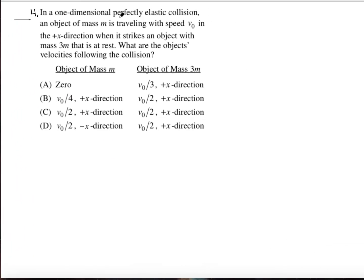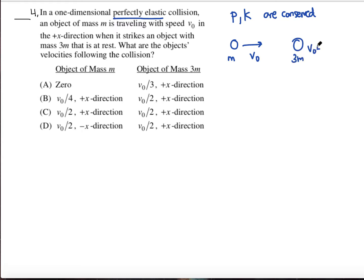For question number four, we have a one-dimensional, perfectly elastic collision — so momentum and kinetic energy are both conserved. Mass m travels at speed v-naught in the x direction and strikes an object with mass 3m at rest. One way to approach this is as a multiple-choice question: momentum must be conserved, so m times v-naught plus 3m times zero equals m times v1 plus 3m times v2. We can try plugging in the answer choices.